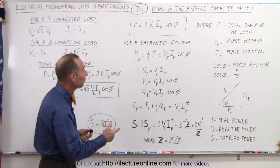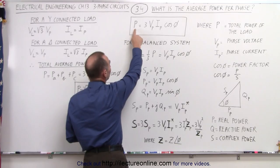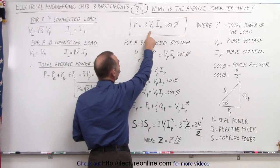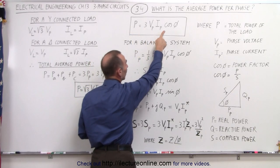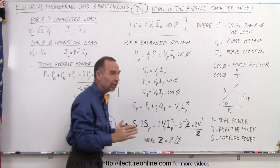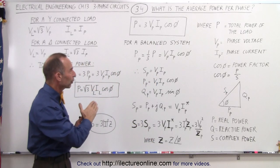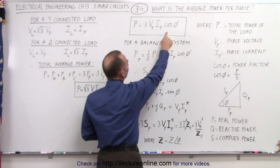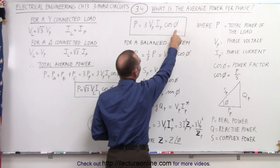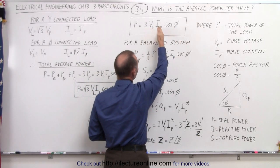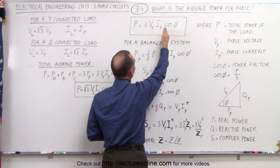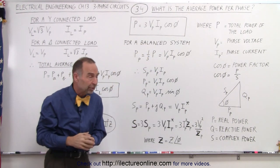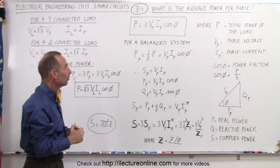In the previous video, we found the equation that the total power of the load is equal to three times the phase voltage times the phase current times the cosine of the phase angle between the current and the voltage. We also noticed that the cosine of the phase angle is a constant, everything else is a constant in the circuit, and we realized that in the three-phase circuit, the power is a constant.